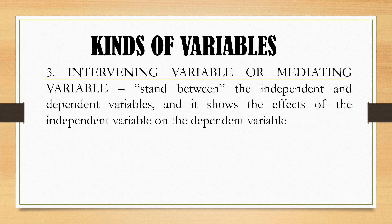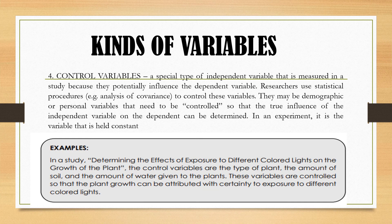The intervening variable, also called mediating variable, stands between the independent and dependent variable and shows the effect between them. Aside from that, we also have control variable — a special type of independent variable that is measured in a study because it potentially influences the dependent variable. Researchers use statistical procedures such as analysis of covariance to control these. They may be demographic or personal variables that need to be controlled.